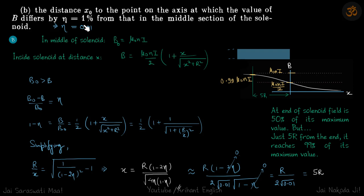He has given that it differs by 1%, but we know that it decreases by 1%. B naught maximum value is obviously more than this at distance x. The change, B naught minus B by B naught, equals eta. We'll take eta in fraction 0.01. This becomes 1 minus eta equals B by B naught, which equals 1 by 2, 1 plus x by root x square plus r square.